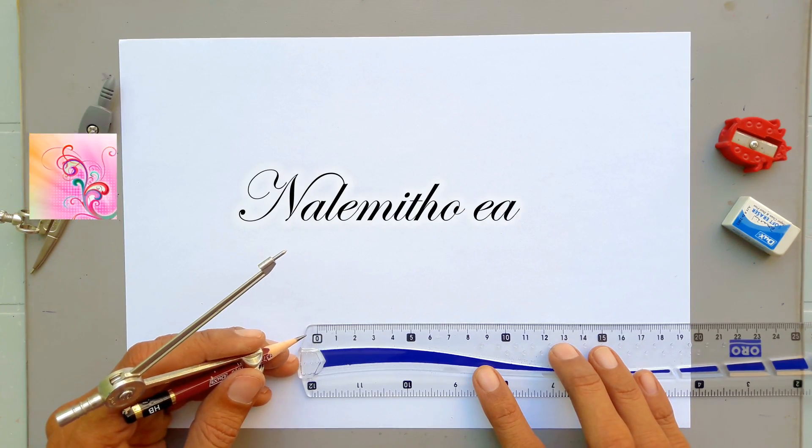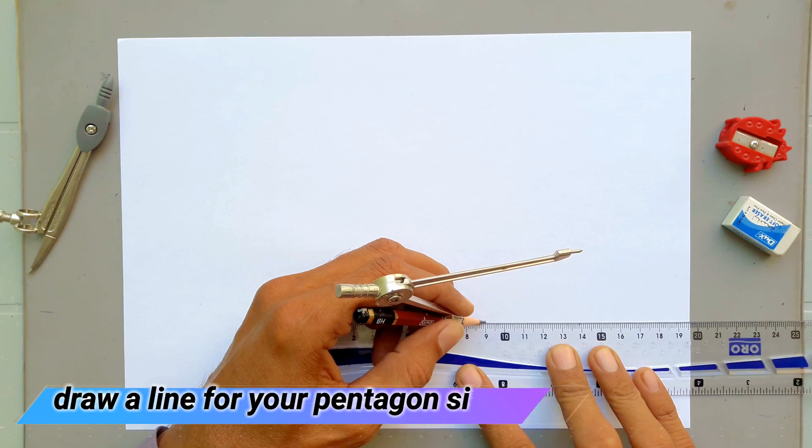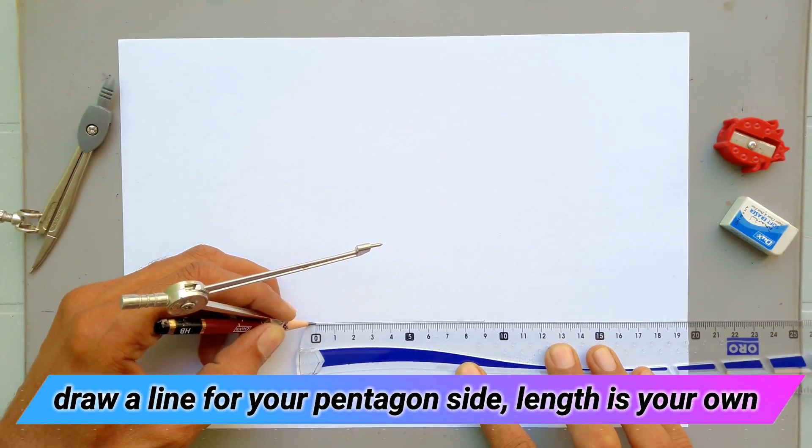Assalamu alaikum friends. I'm Nalaimitho and you are watching Nalaimitho easy drawing. First draw a line whose length is the side of the pentagon.